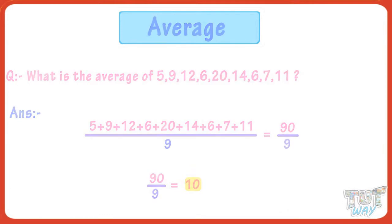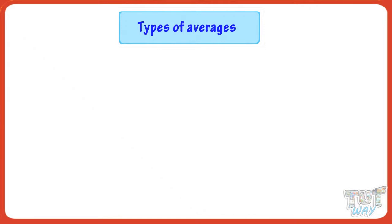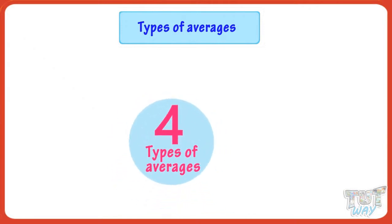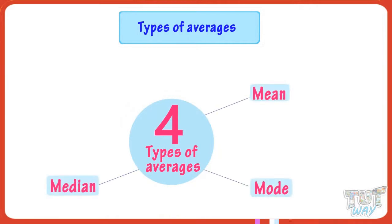Now let's learn types of averages. There are 4 different types of averages known as mean, mode, median, and range. Today we will learn finding two types of averages — that is the mean and the mode.